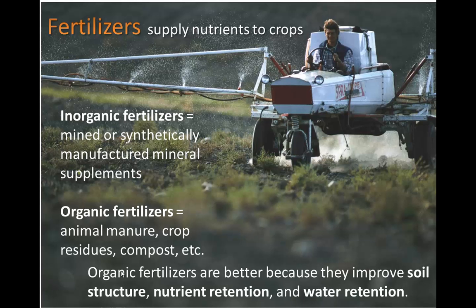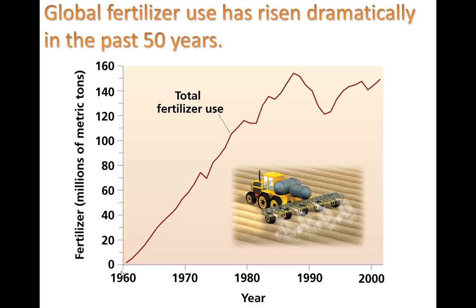Organic fertilizers are better because they improve soil structure, nutrient retention, and water retention. Global fertilizer use has risen dramatically in the past 50 years — we've seen this graph before when we spoke about eutrophication. Total fertilizer use has gone from near zero in 1960 to around 150 million metric tons applied per year, and you can see it has kind of stabilized a little bit.